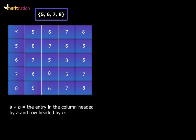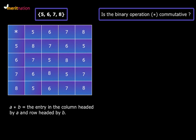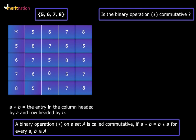Now what we need to find out is whether the binary operation star is commutative or not. A binary operation star on a set A is called commutative if A star B equals B star A for every A and B that belong to set A.